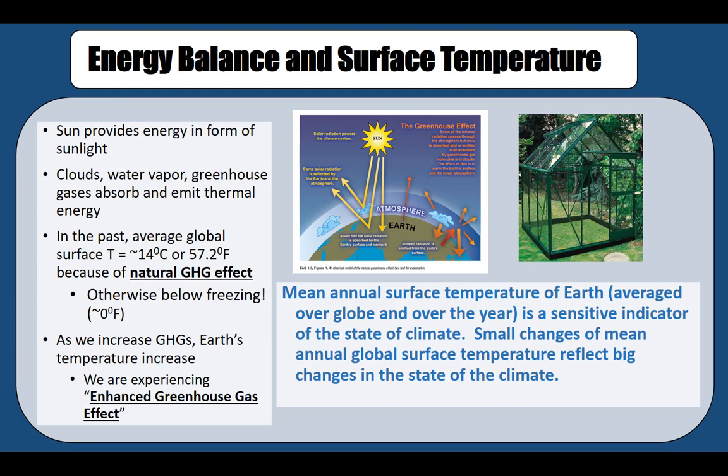But as more and more greenhouse gases are emitted into the atmosphere, the earth becomes warmer and warmer — just like covering yourself with more and more blankets when you don't want to. This warming caused by additional greenhouse gases entering the atmosphere very rapidly is known as the enhanced greenhouse gas effect. The natural greenhouse gas effect is produced by the greenhouse gases already present in the air; the enhanced greenhouse gas effect occurs when more greenhouse gases are emitted from human activity, such as burning fossil fuels.